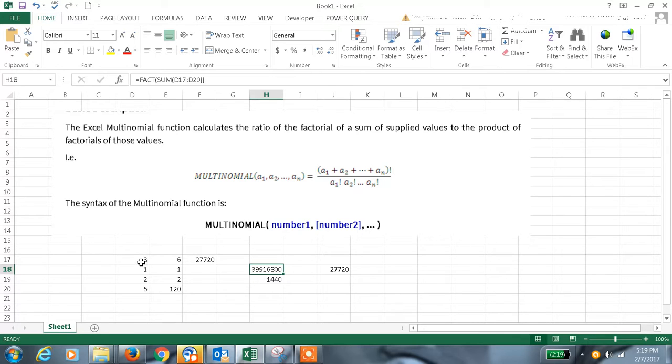And each value, the factorial of each value should be multiplied with the other value. And the second one we will get here—the ratio of these two is the MULTINOMIAL function formula, how that will work.